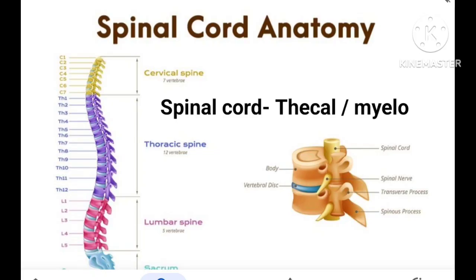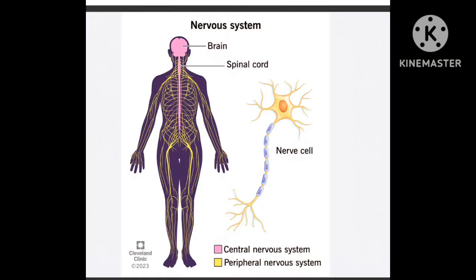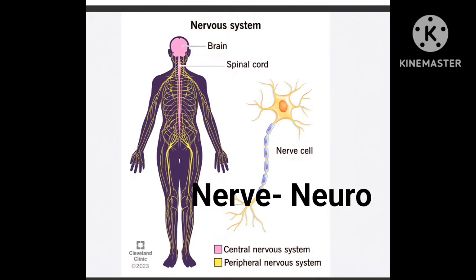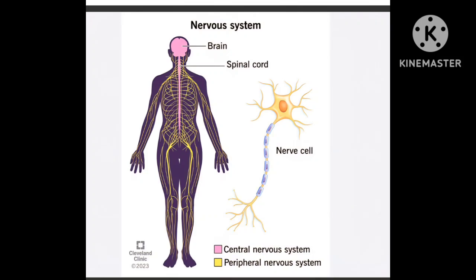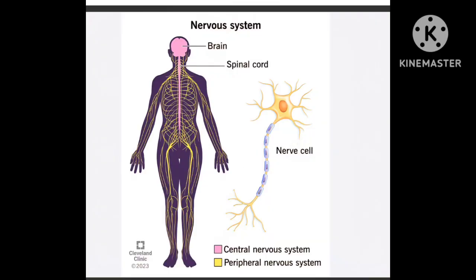The medical term for spinal cord is thecal or myelo, and the medical term for nerve is neuro. So these are the medical terms we will come across in this chapter. Now I'll ask you a question: What does craniotomy mean? And what does neurography mean? You can drop your answers in the comments. Thanks for watching my video, and please don't forget to subscribe to my channel.